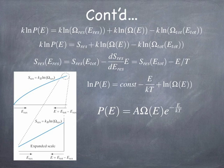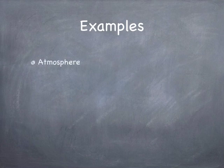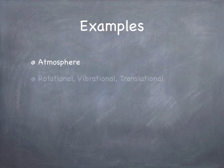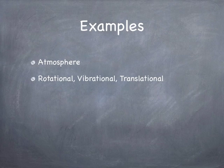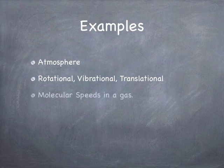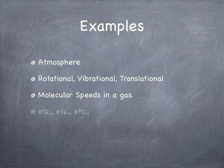Don't worry too much about the derivation — it's a little subtle — but the result is very important: the probability of having more energy is less than the probability of having less energy, with the Boltzmann factor e^(−e/k_BT). This factor explains why atmospheric pressure decreases with altitude, why molecular speeds follow the Maxwell-Boltzmann distribution, and the probabilities of rotational, vibrational, and translational energies. There will be homework problems to exercise how this works.